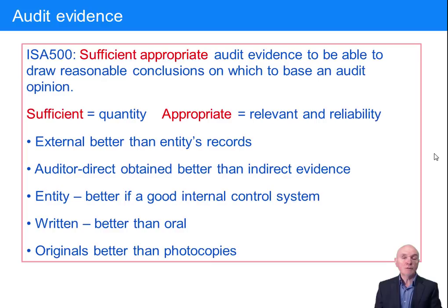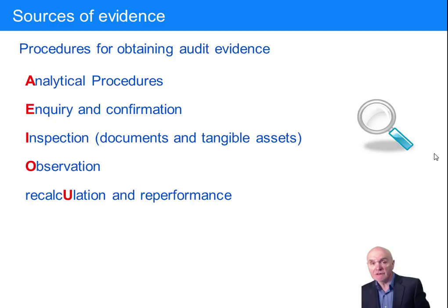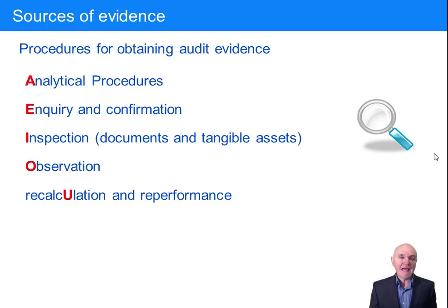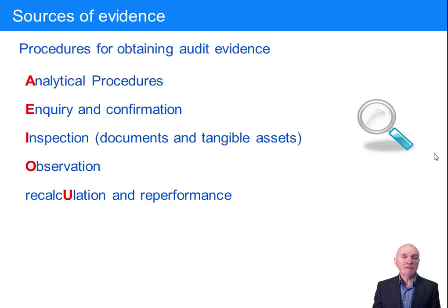What are the sources of evidence we can have? There are only five sources or classes of evidence, remembered by the vowels A, E, I, O and U. Analytical procedures — essentially looking at ratios, which we'll cover in more detail later. Inquiry and confirmation — a source of evidence where you inquire of management.